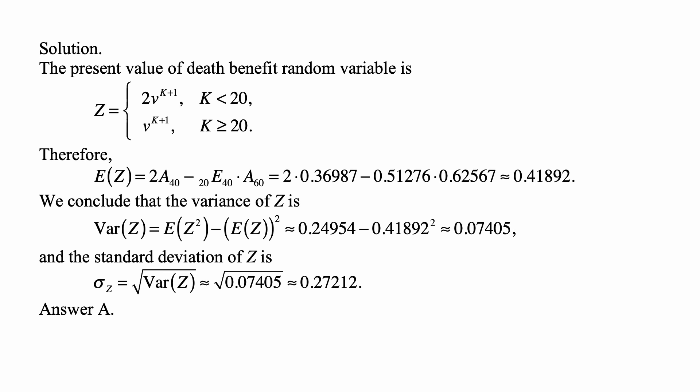We conclude that the variance of Z is the second moment — given in the problem — minus the square of the first moment we just calculated. So 0.24954 minus 0.41892 squared, which is approximately 0.07405. The standard deviation is the square root of that, which is approximately 0.27212. That's answer A.